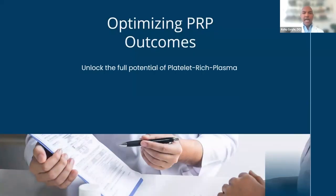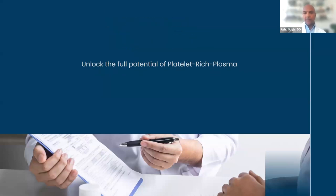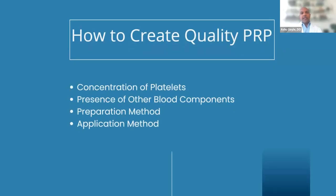So not all PRP is created equal. How do we optimize PRP outcomes? It's really important to invest in a high-quality PRP collecting and processing system. You want to stand out from colleagues by always delivering the best quality possible. We've now come to realize that platelet dose matters, and to obtain an effective therapeutic dose of platelets, we need at least 60cc's of blood.